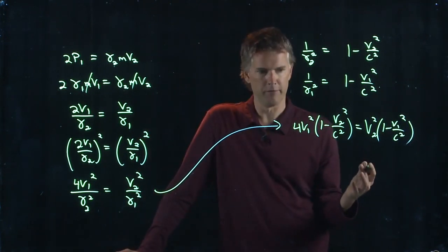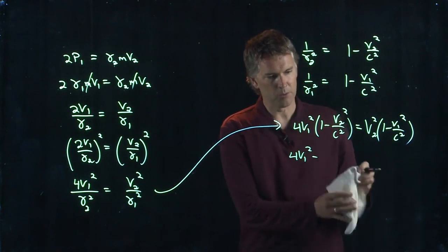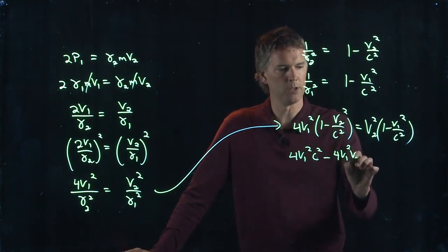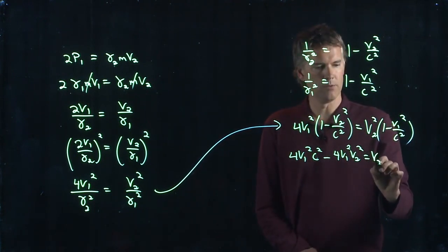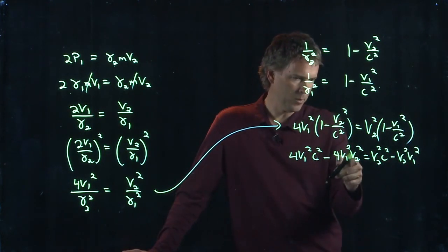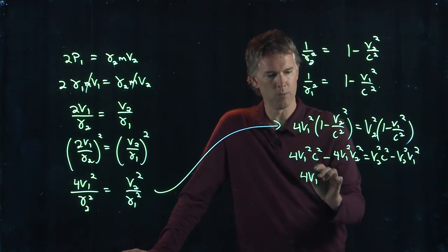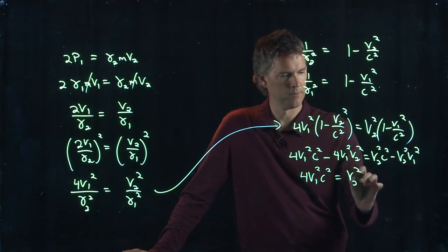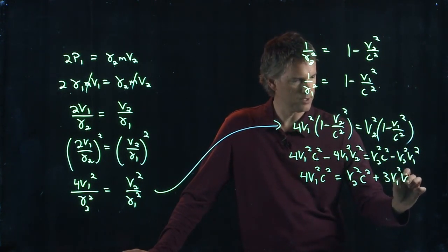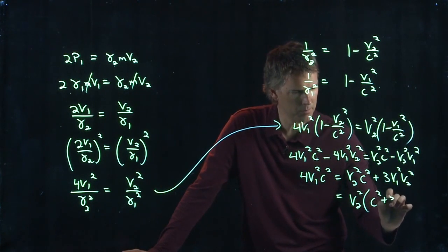And now we can just simplify this and solve for v2. Let's just do it real quick. Multiply everything by c squared. We get 4 v1 squared times c squared minus 4 v1 squared v2 squared equals v2 squared c squared minus v2 squared v1 squared. And now I have a v1 squared and a v2 squared and so I can put those together. And then I have 4 v1 squared c squared that's left. When I add 4 to that negative 1 I get 3 v1 squared v2 squared. And now we can put the v2's together, v2 squared times c squared plus 3 v1 squared.